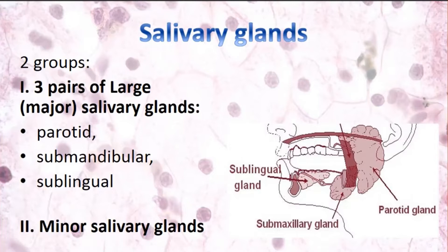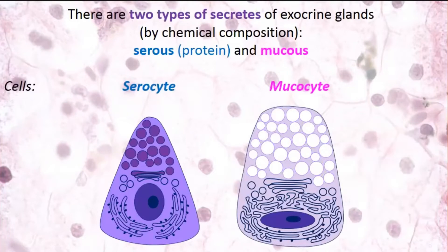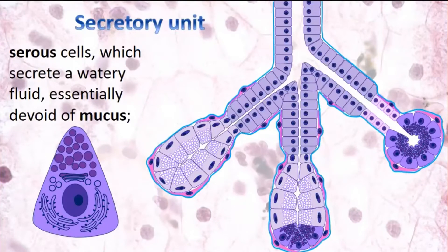Today we'll talk mainly about major salivary glands, beginning with the cells which form them. There are two types of secretion of exocrine glands by chemical composition: serous type or protein type, and mucus type. Cells which provide those types of secretion are called serocytes and mucocytes — serous cells and mucus cells. Serous cells are darkly stained, have a pyramidal or triangular shape, and produce watery fluid rich in proteins. Sometimes saliva is very fluid and contains a lot of water — serocytes produce this type of saliva.